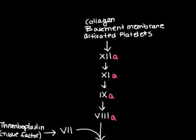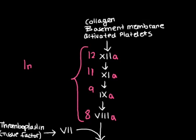This sequence is easily remembered if you simply think of it as 12, 11, 9, 8. So counting down from 12, but skipping 10. So all of this is known as the intrinsic coagulation pathway.